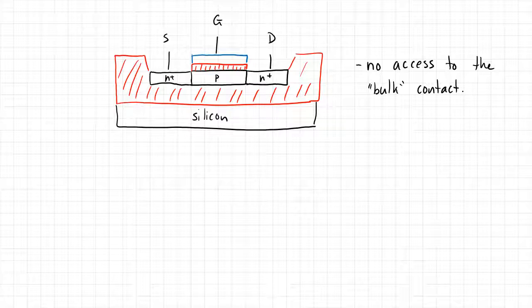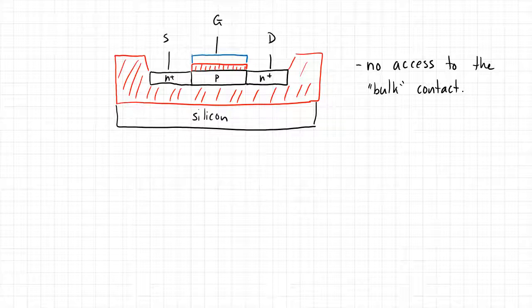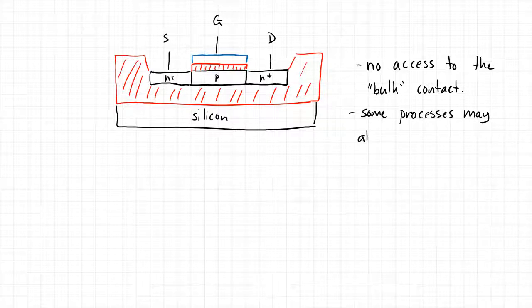SOI is a somewhat popular type of process option, particularly in the RF space, for a variety of different reasons. Even in SOI processes, some transistors may not have access to this bulk contact, though most processes do allow bulk contact access if you really want to contact the bulk of the transistor.